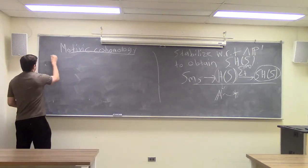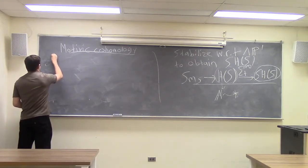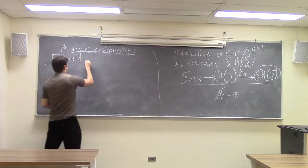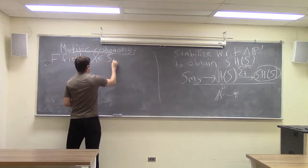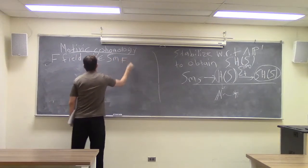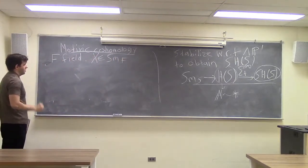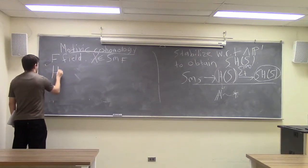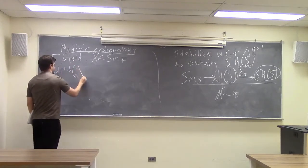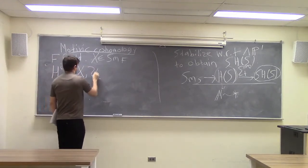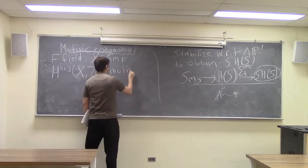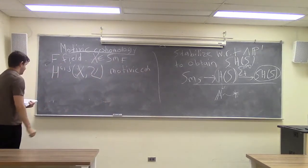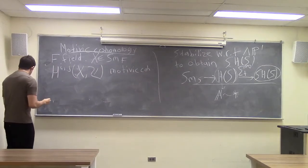So, motivic cohomology. We're going to specialize now to our base scheme being a field. If we have a smooth quasi-projective variety over that base field, then Voevodsky and others introduced bigraded cohomology groups. These are called the motivic cohomology groups. I don't want to define them, but I'll tell you what some important ones are for our purposes.